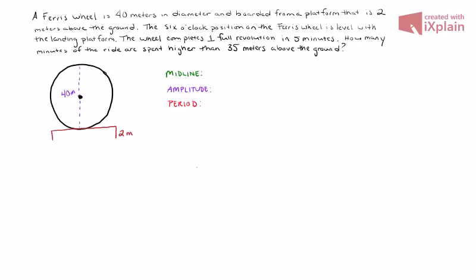A Ferris wheel is 40 meters in diameter and boarded from a platform that is 2 meters above the ground. You can see the image located on the left hand side of the screen. The six o'clock position on the Ferris wheel is level with the landing platform. The wheel completes one full revolution in five minutes. How many minutes of the ride are spent higher than 35 meters above the ground?